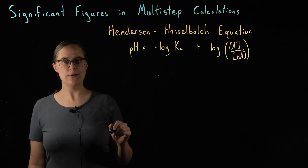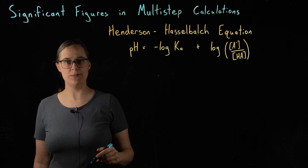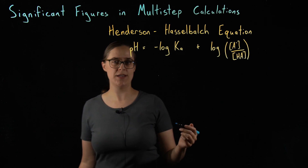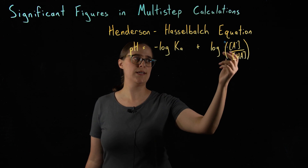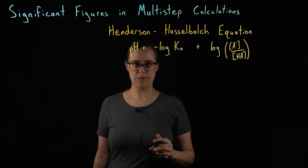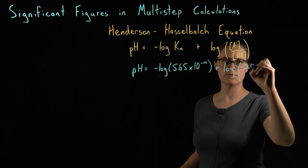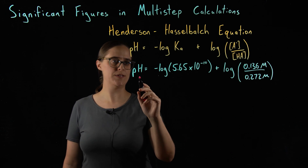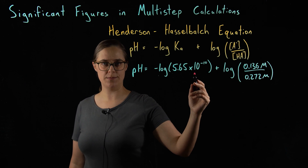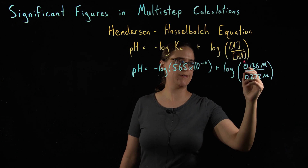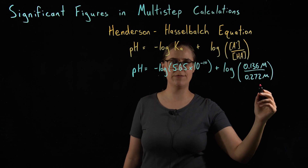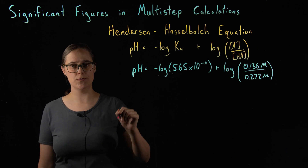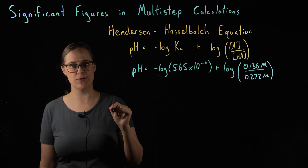Let's do another example problem using the Henderson-Hasselbalch equation, which is used in chemistry to determine the pH of a buffer solution. I think it's a good example because it involves many different mathematical operations: logs, division, and addition. The equation with realistic numbers plugged in is: pH equals negative log of (5.65 times 10 to the minus 10), plus log of (0.136 molar divided by 0.272 molar). I am going to work this problem out showing all of my work, then go through step by step keeping track of significant figures and rounding only once at the end.